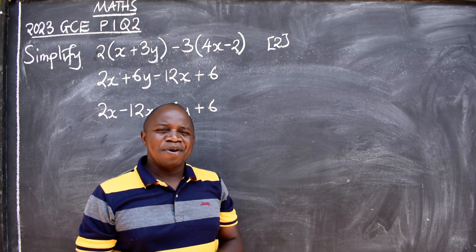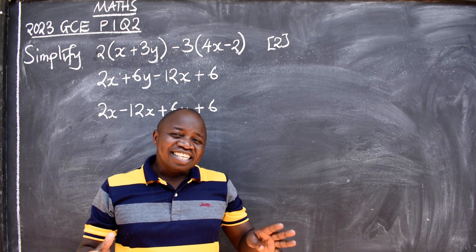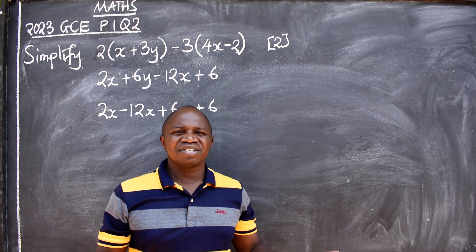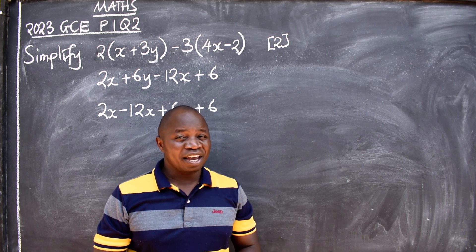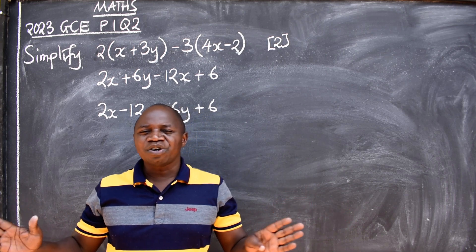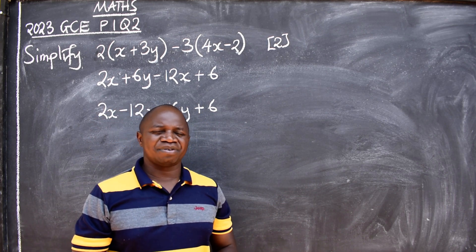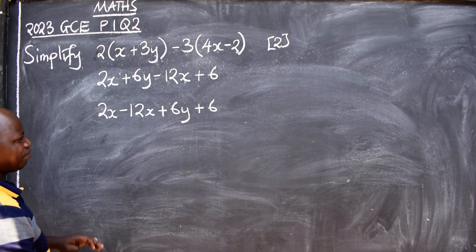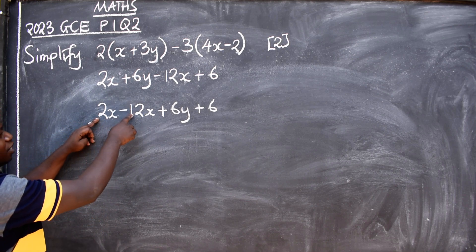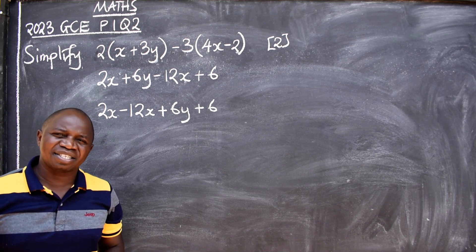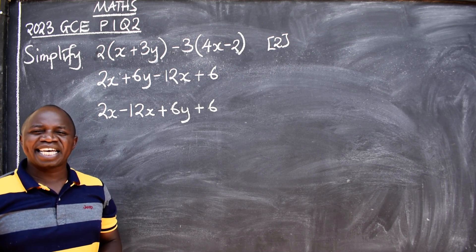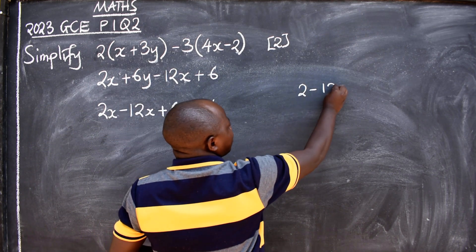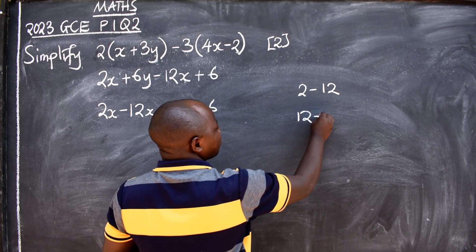The rule is: like terms can be added or subtracted, and unlike terms cannot be added or subtracted. Here we have 2x and 12x — these are like terms. So what is 2x minus 12x? Some would say 10, which is not correct. Look: you have 2 minus 12, and 12 minus 2 — these two are not the same.